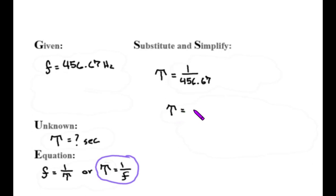I get a number 0.0021897 seconds. It's really long. If I make it pretty for physics class I'm going to call it 0.0022 seconds.